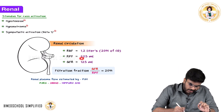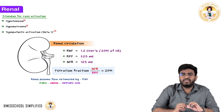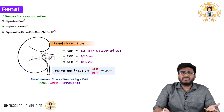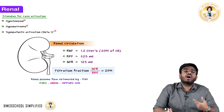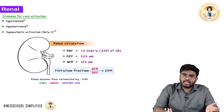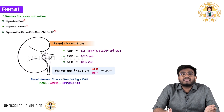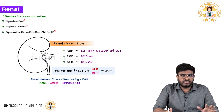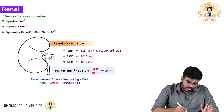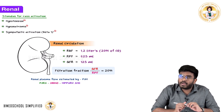We are mainly concerned about the plasma, not the whole blood. Why? Because RBC, WBC, and platelets are not filtered. What actually filters in the nephron is the plasma — the fluid. So 625 ml of plasma is going to the nephrons.